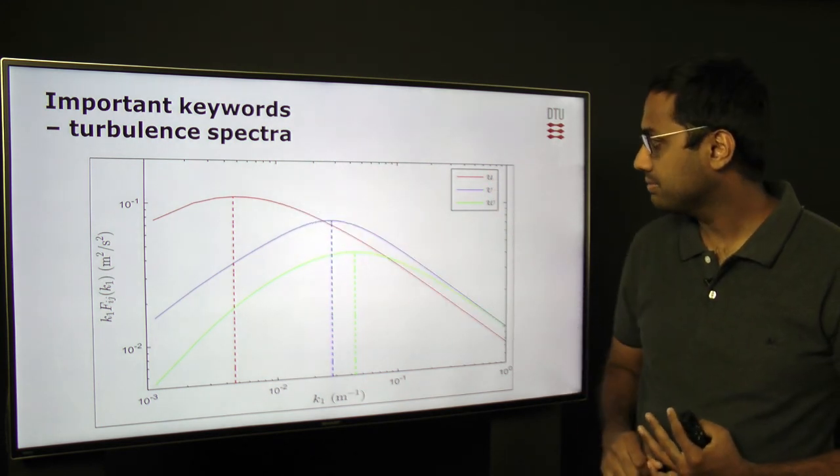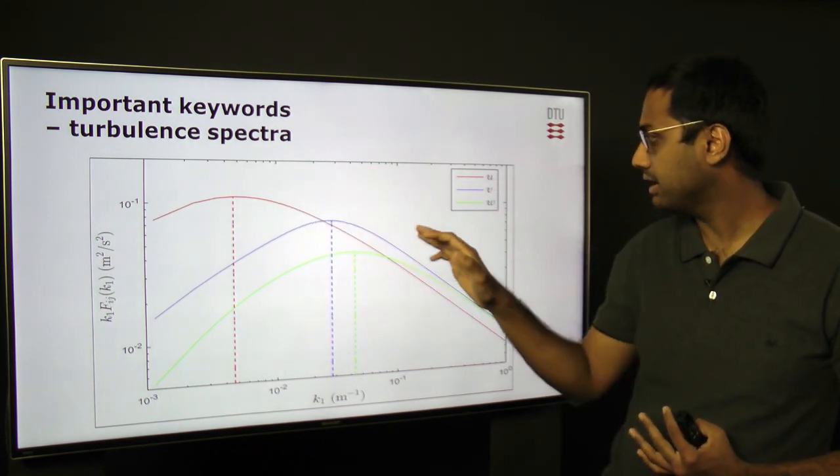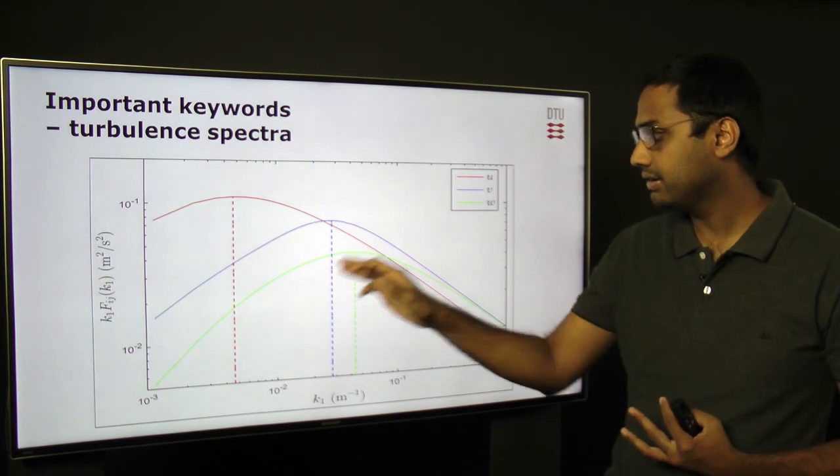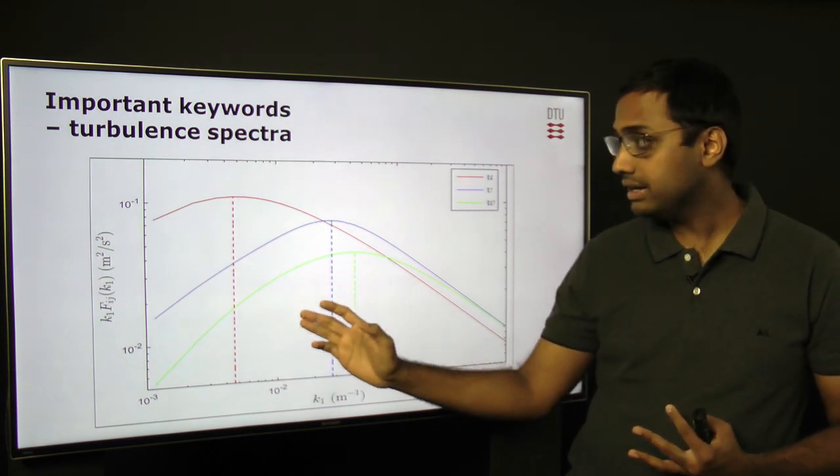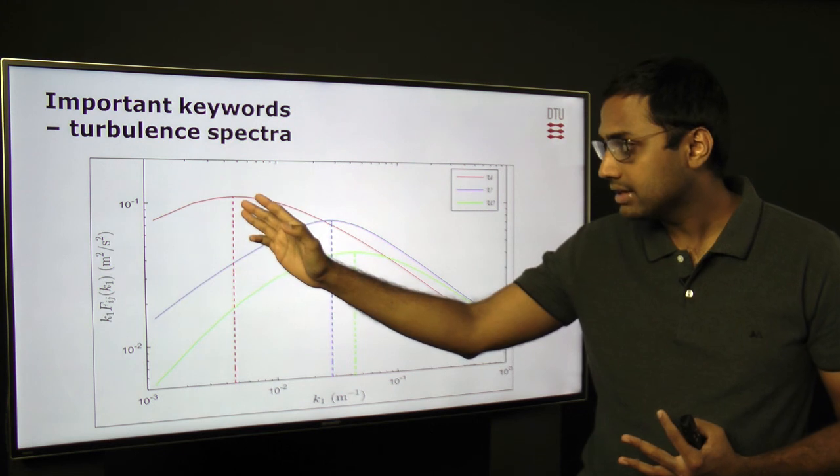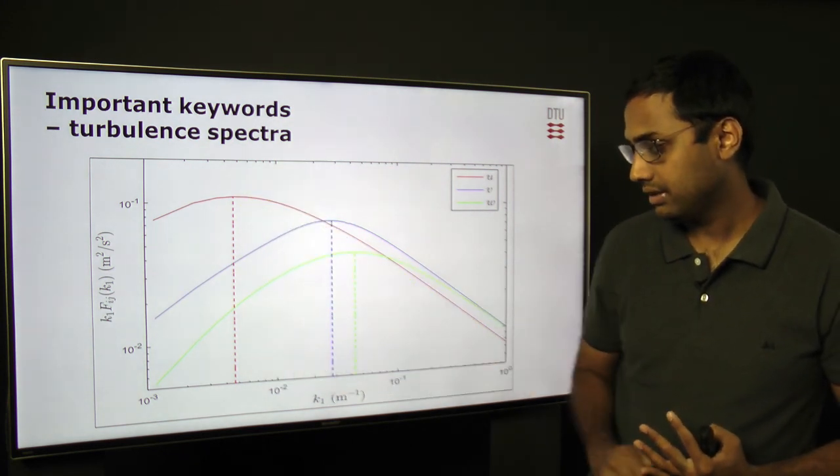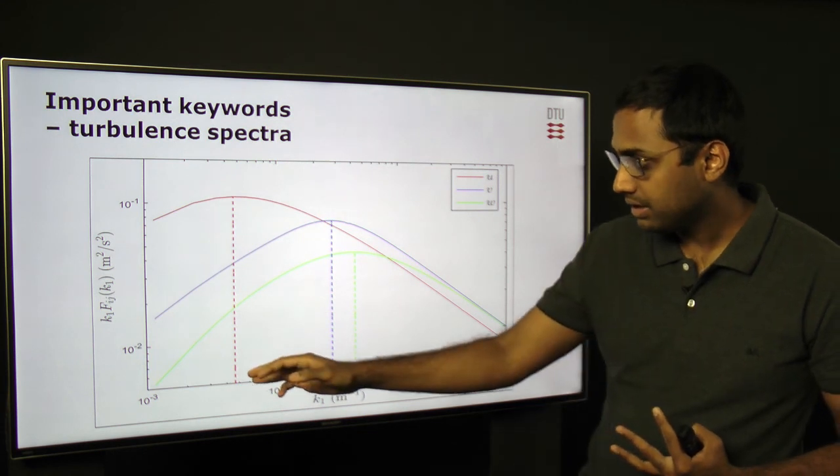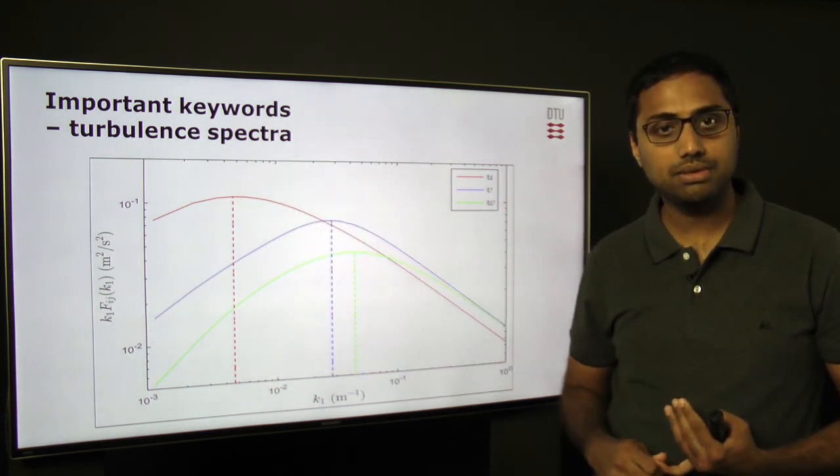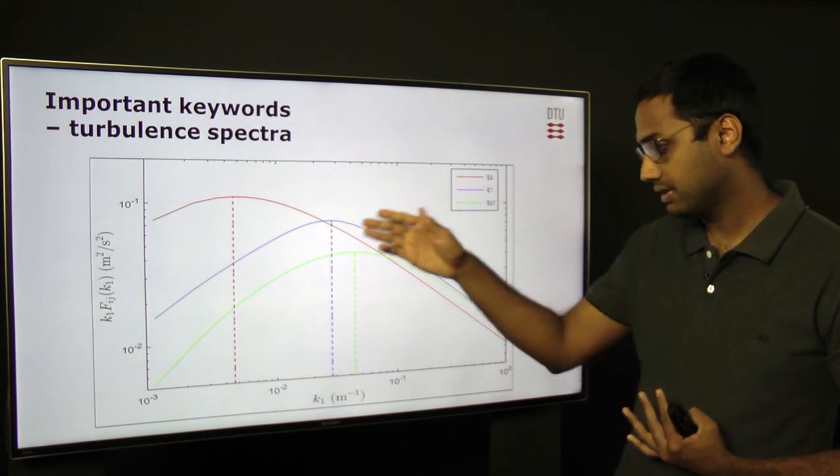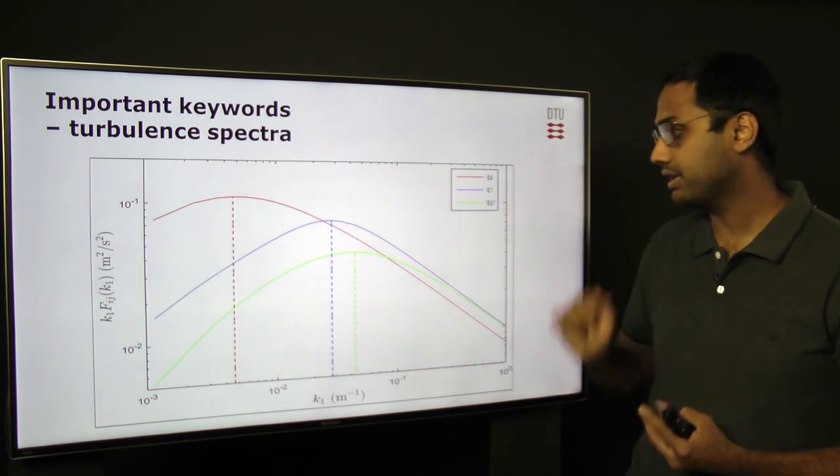The red line shows the spectrum of the U component, the blue line is for the V, and the green is for the W. As we can clearly see, the turbulence length scale, which is given by the wavelength or wave number corresponding to the maximum energy in the spectra, is very different for different components.